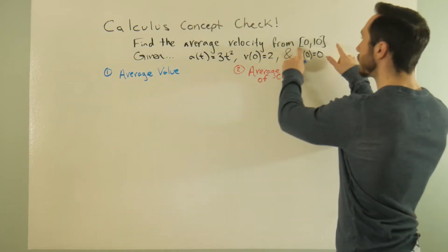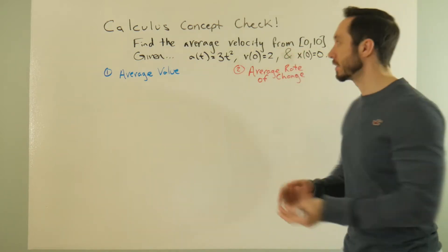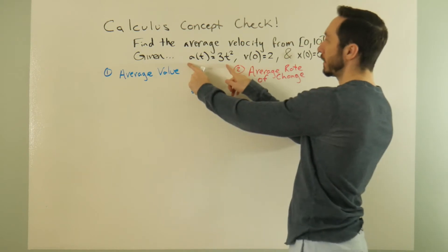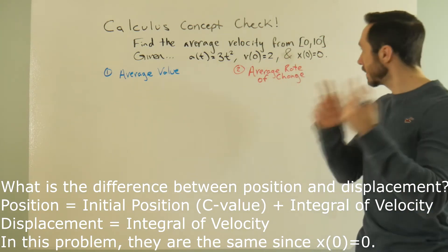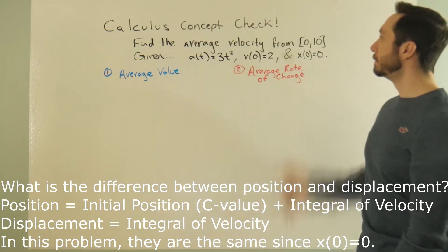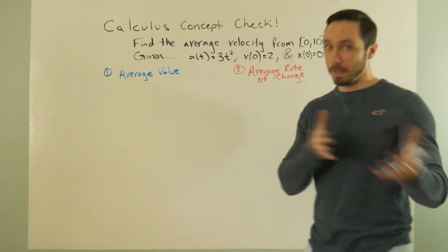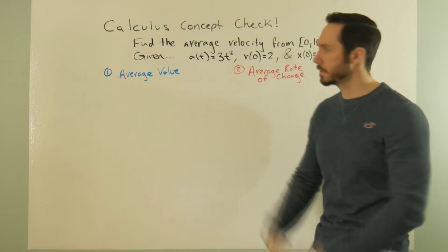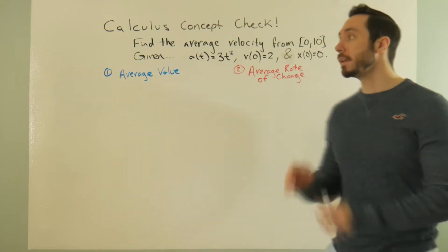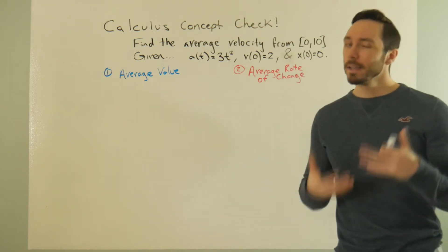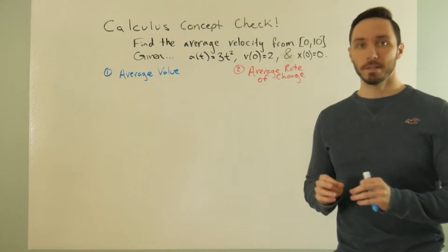Find the average velocity from 0 to 10. That seems like a pretty reasonable thing to ask. If I have the acceleration function and I have some snapshot moments of the velocity and displacement, I can then use my understanding of derivatives and integrals to maybe use both of these. They're different things, but they can be used in this particular situation in similar ways, but there's a different practice behind it.